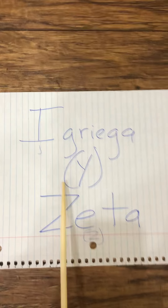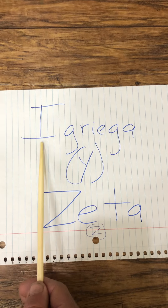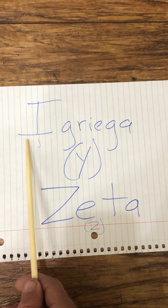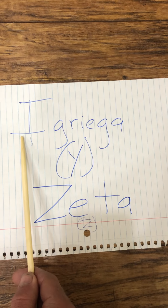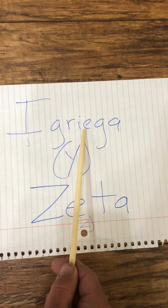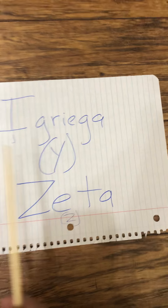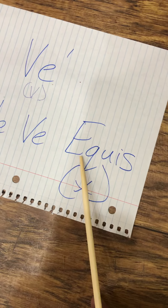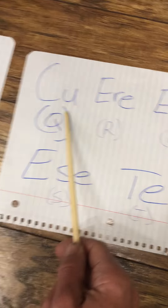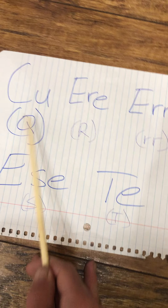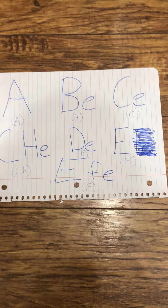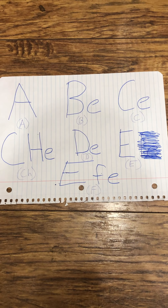So we're going to practice saying the Spanish vowels to make it easier before we learn the alphabet. Repeat after me: A, E, I, O, U. And a little bit faster — A, E, I, O, U. A, E, I, O, U.